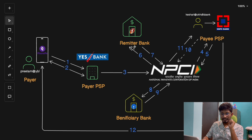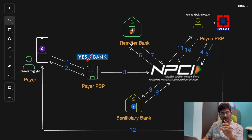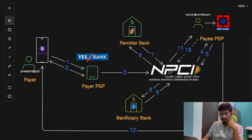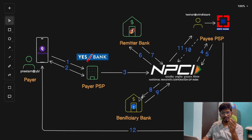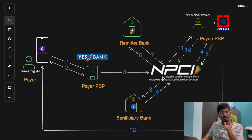In Step 6, NPCI sends a debit request to your bank. Your bank then checks your account balance to make sure there are enough funds and starts the process of deducting the amount. In Step 7, after deducting the required amount, your bank sends a debit response back to NPCI confirming that the money has been successfully debited. In Step 8, after successfully debiting your account, NPCI sends a credit request to the beneficiary bank — the merchant's bank — instructing it to credit the same amount into the merchant's account.